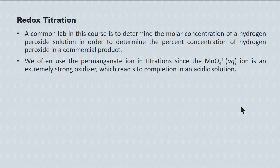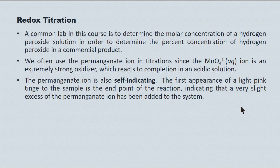There's a common lab in this course where we determine the molar concentration and then the percent concentration of hydrogen peroxide in a commercial product — essentially testing to see if the vendor has watered down the peroxide. We do so by titrating it with the permanganate ion, since the permanganate ion is an extremely strong oxidizer and reacts to completion in an acidic solution. It's also self-indicating: the first appearance of a light pink tinge to the sample is the endpoint, indicating a very slight excess of permanganate ion.